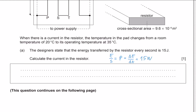We calculate the current using the formula from the data booklet and rearrange to get I = √(P/R). Plugging in the values: I = √(15 / 4.2), which gives 1.9 amps. This is the current in the resistor.